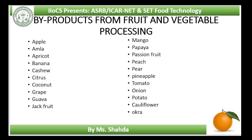Grapes are used in five different ways: table purpose, canned juice, wine and raisins. Stem, pumice and seeds are the main by-products of the grape industry. Stems separated from grapes normally constitute about 5% of the original weight of grapes and can yield cream of tartar (potassium tartrate). The pumice consists of pressed skin and seeds and can be used for preparation of grape jelly, chutney and animal feed. Pumice must be dried to less than 10% moisture to prevent spoilage. Grape marc can be used for preparation of pectin. Argols (potassium hydrogen tartrate) can be obtained from grape juice settlings.